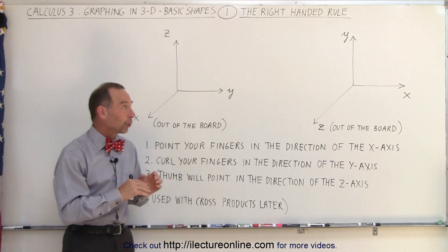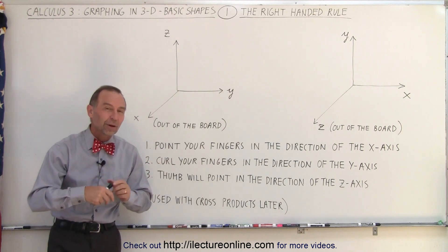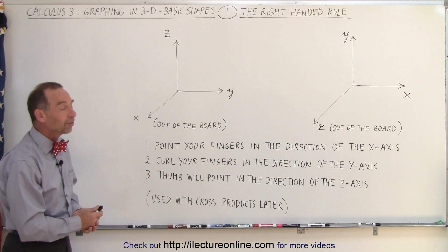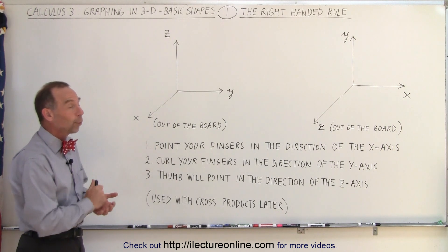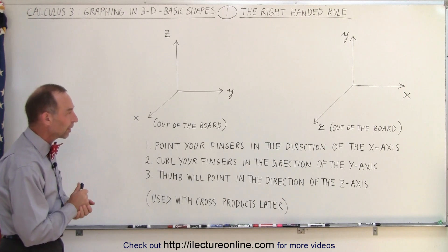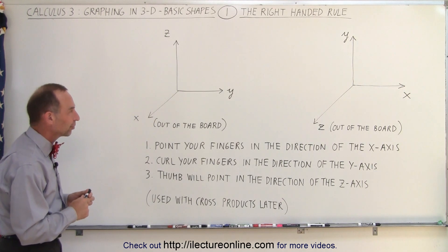Before we do that, however, we're going to talk about a few of the things that we need to know and understand in three-dimensional space, starting with what we call the right-handed rule, something we're going to need for three-dimensional vectors, especially when we do cross-products of those vectors.